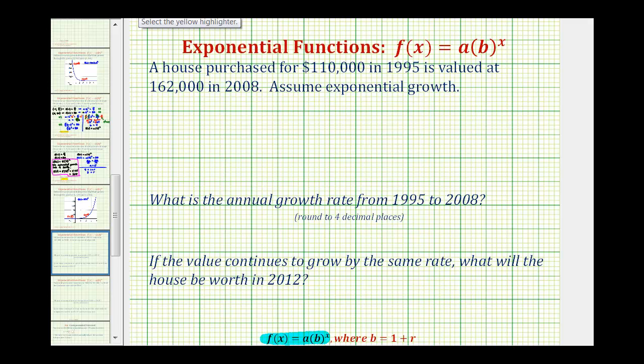So going back up to our given information, since the house was purchased for $110,000 in 1995, we're going to use 1995 as the base year, which means we'll let t equals zero represent 1995. And this is a common practice when the time is given as a year. So if the house is valued at $110,000 in 1995, we can now say that f(0) must be equal to $110,000. This is helpful because now we know that a, the initial value, is going to be equal to $110,000.